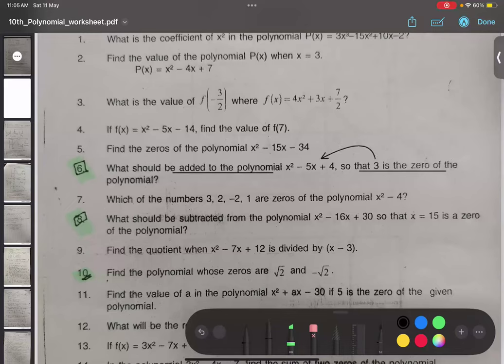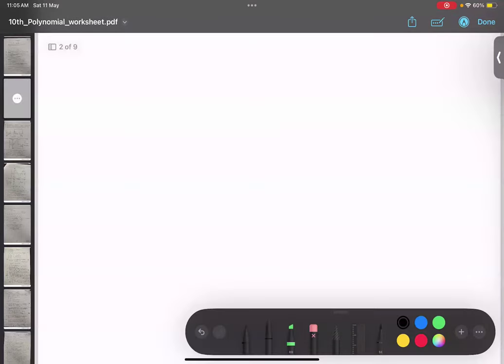So, we will write as 3 is the zero of polynomial P(x). Therefore, I can say x equals 3, therefore x minus 3 is the factor, yes or no? Yes.